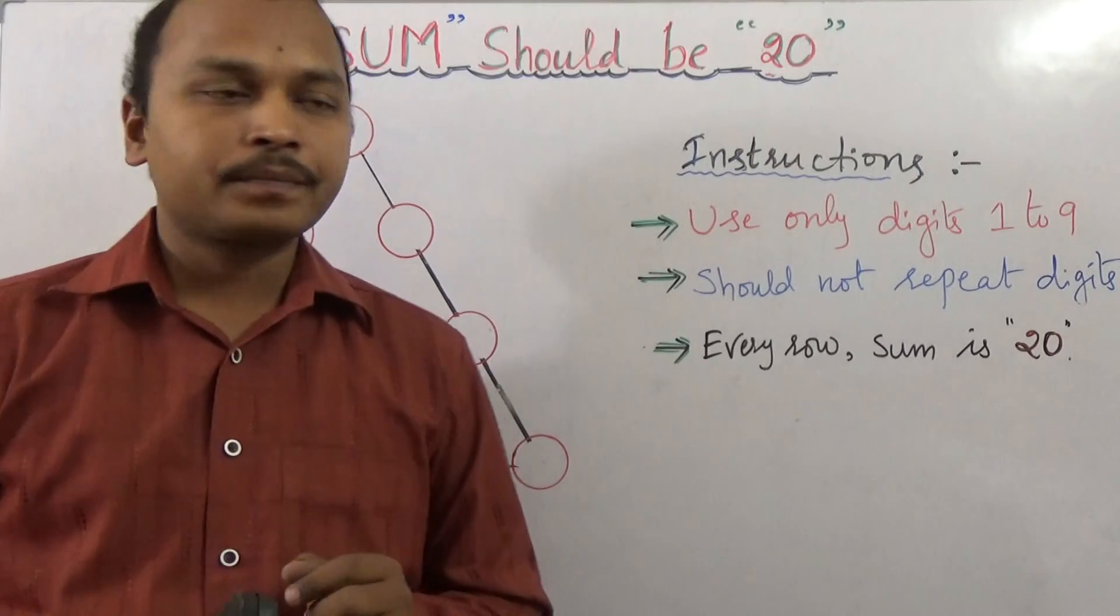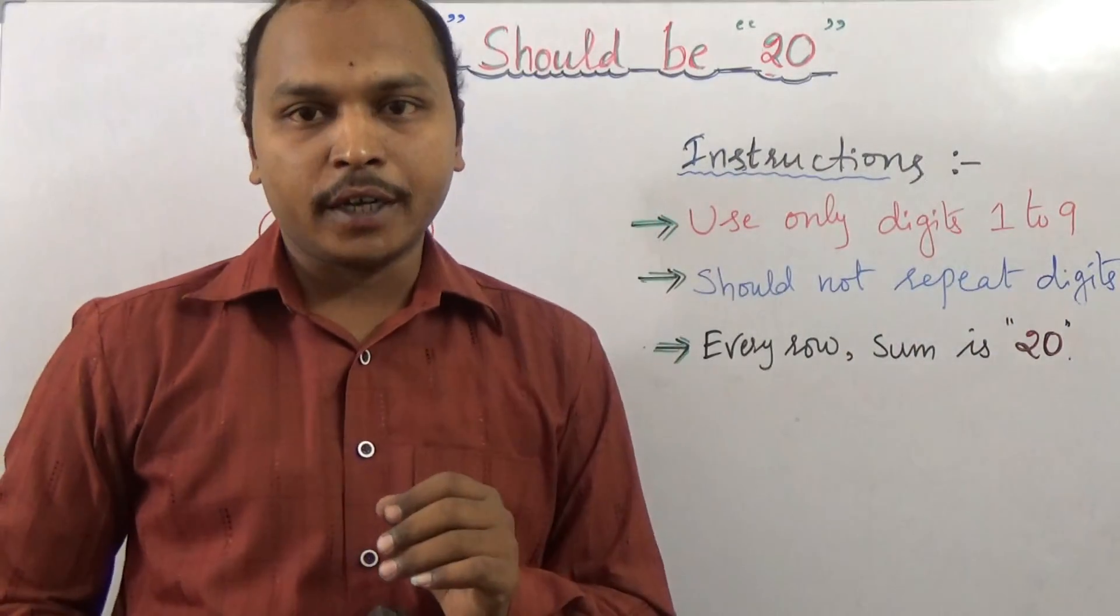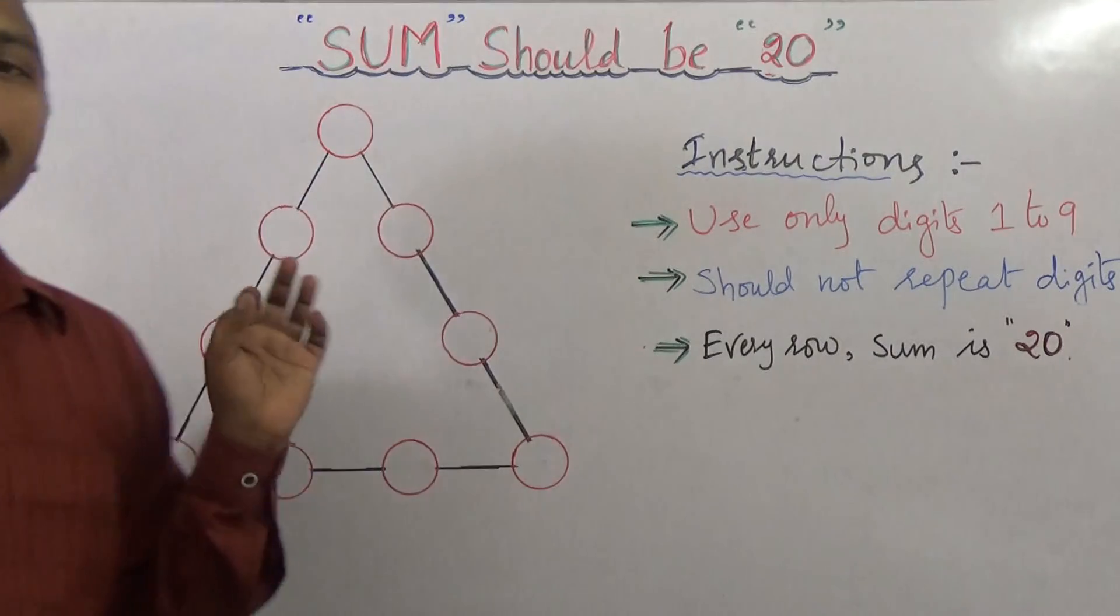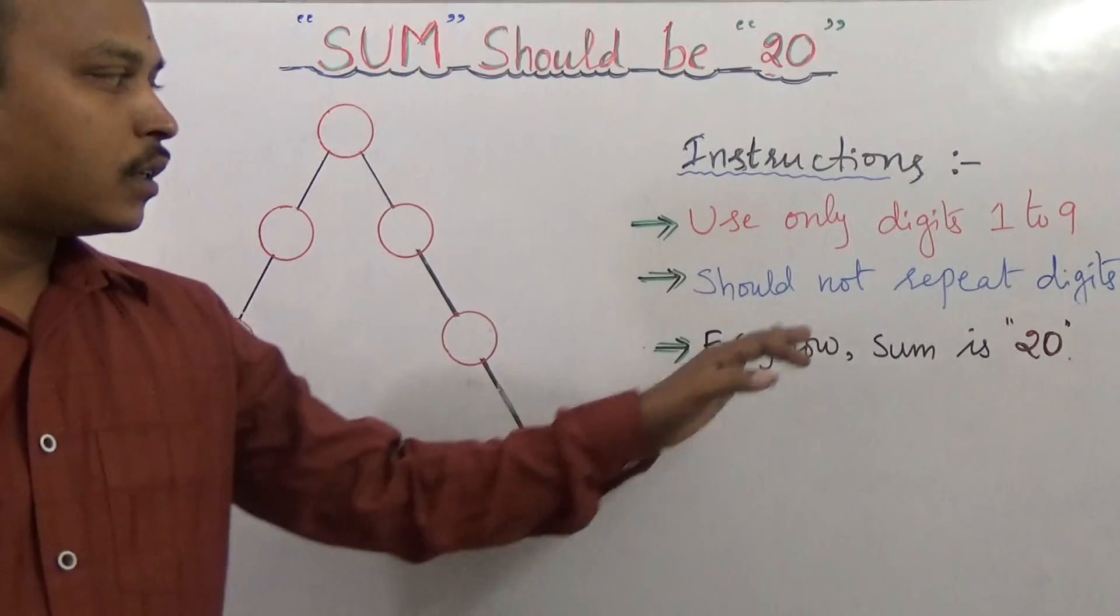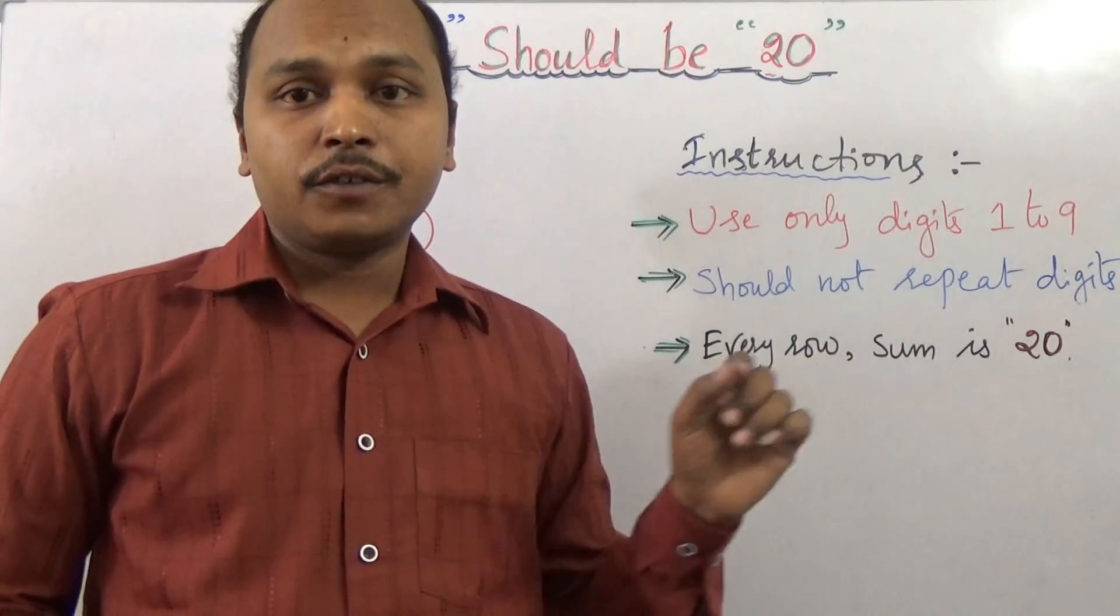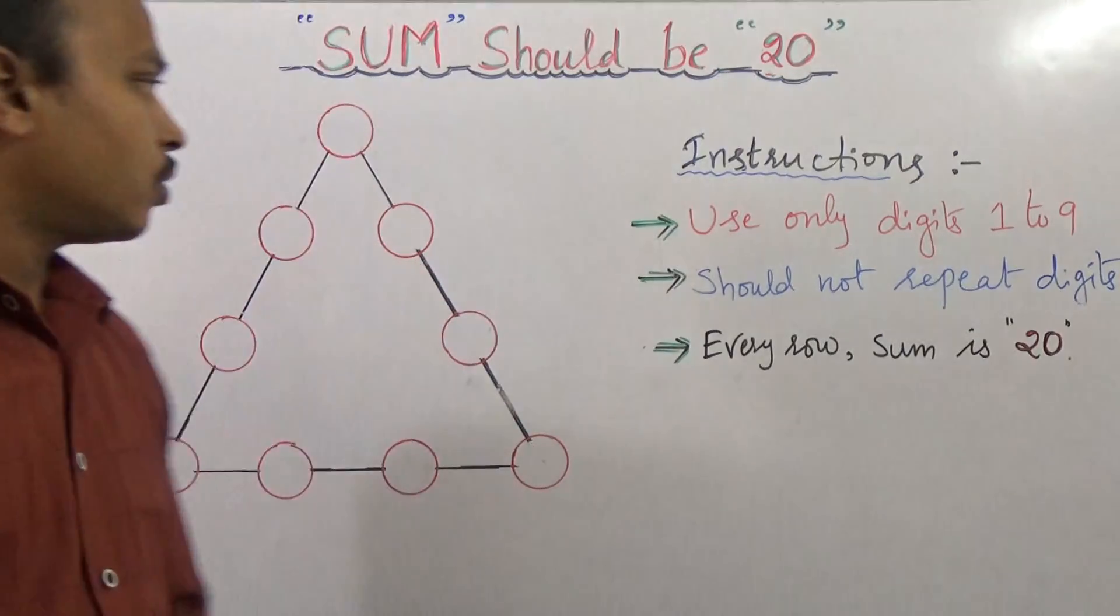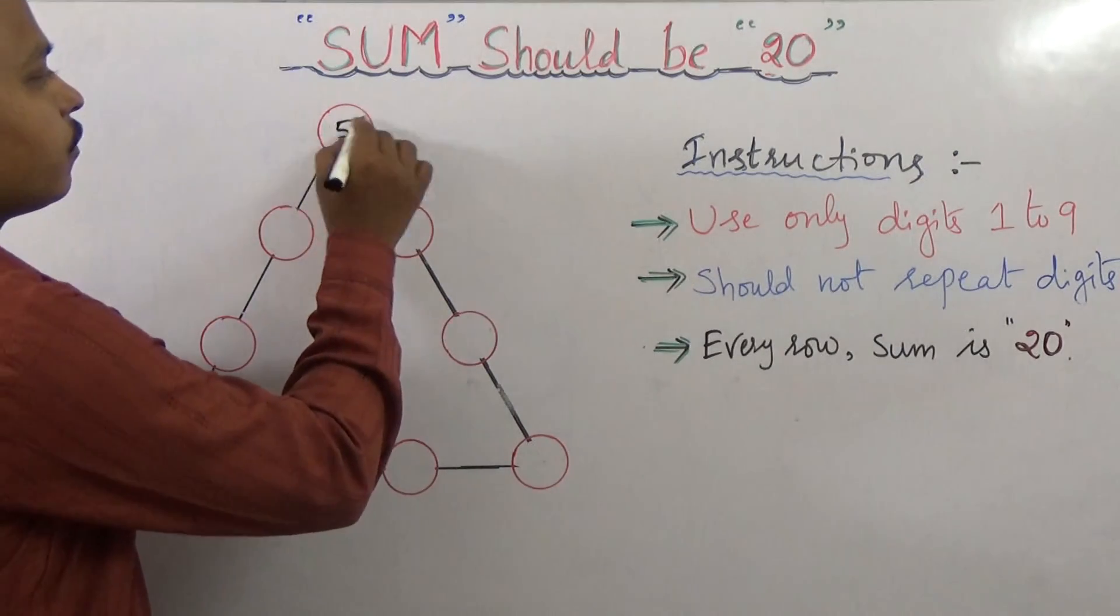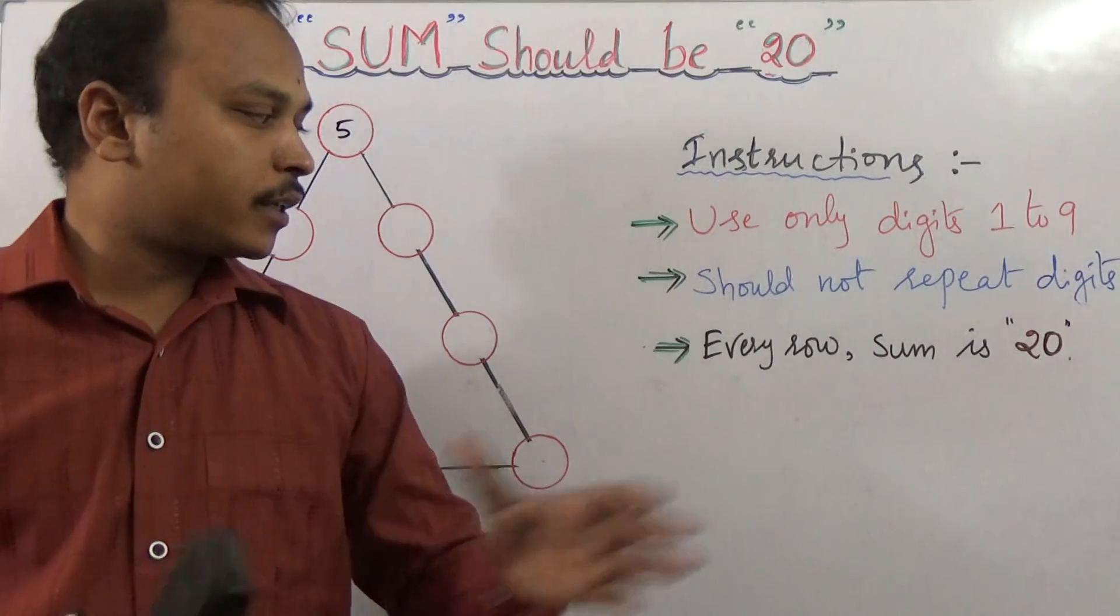So the condition is we need to use the digits only 1 to 9. Total we have nine circles, so digits 1 to 9 should not repeat. The digit, if you write one digit in one circle, should not repeat one more. For example, if you write 5, no number 5 should be in any other place.